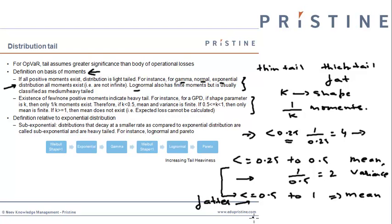And if the shape parameter is greater than or equal to 1, then even the mean is infinite. So these cases signify very very heavy tails in case of GPD. We can see that as the shape parameter increases, GPD becomes more and more thick-tailed.